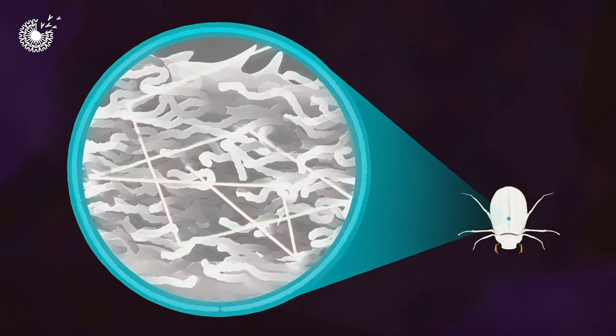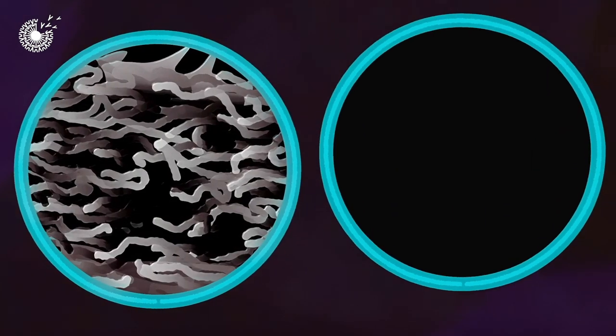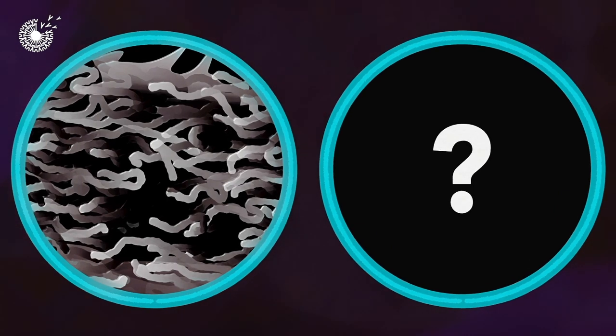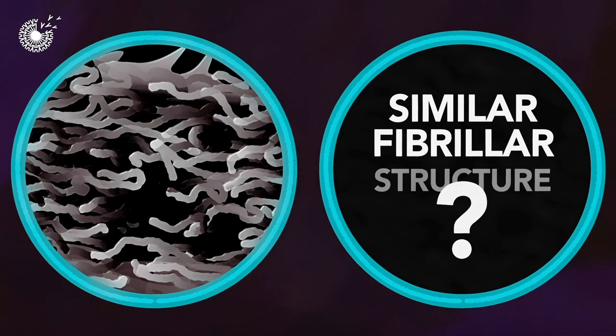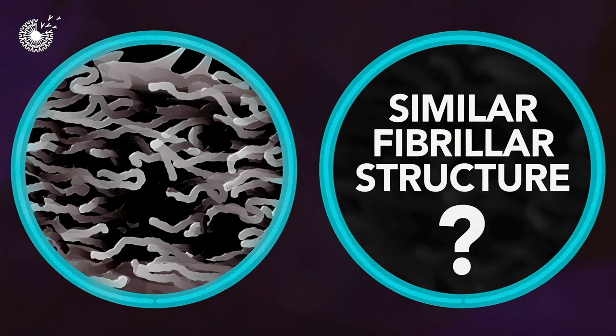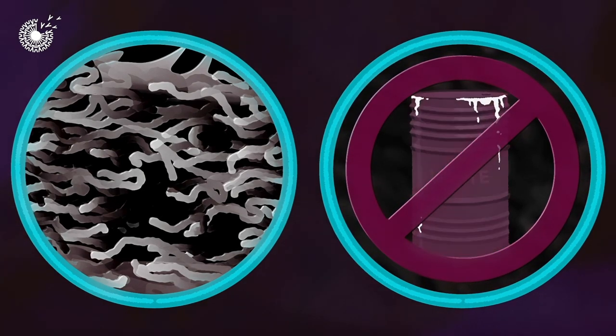Amazed by this phenomenon, the scientists at Impossible Materials thought, what if we could use a similar fibrous structure to create white color, minus the toxic inorganics? So they began experimenting. And what they found is astounding.